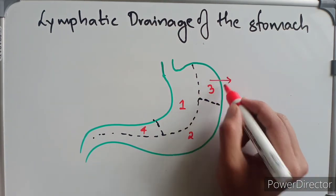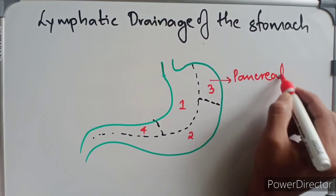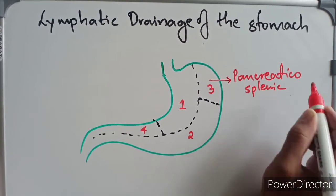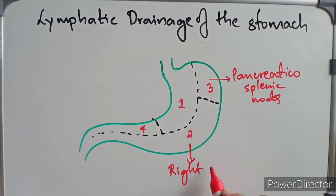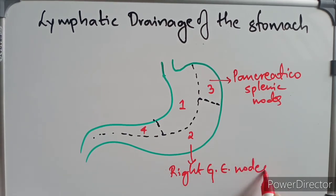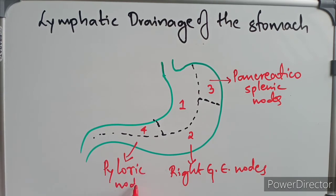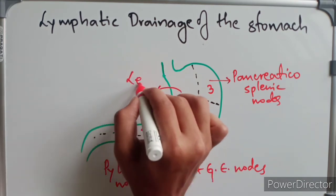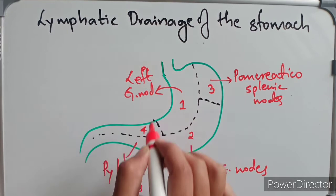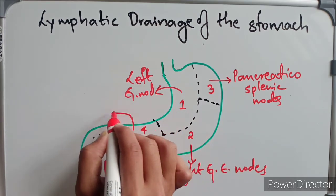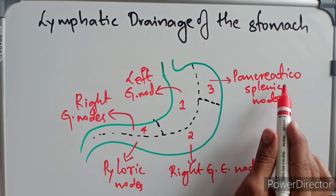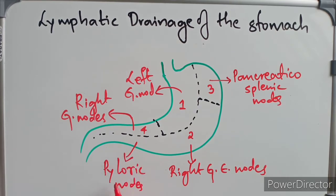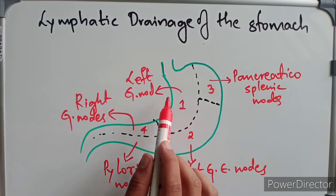The stomach is divided into four regions for better understanding. Region three drains into the pancreatic splenic nodes. Region two drains into the right gastroepiploic nodes. The region near the pylorus drains into the pyloric nodes. Region one drains into the left gastric nodes. Region four drains into the right gastric nodes.